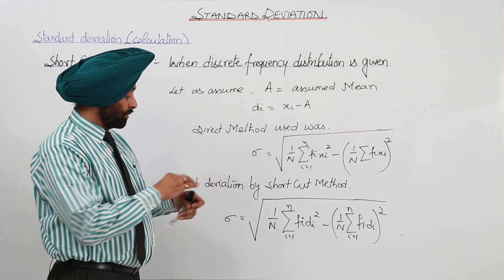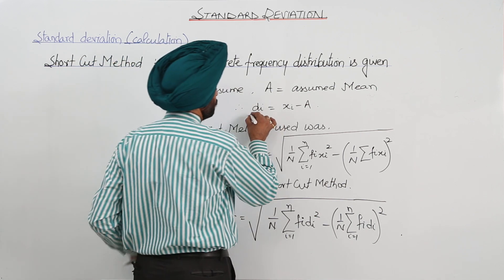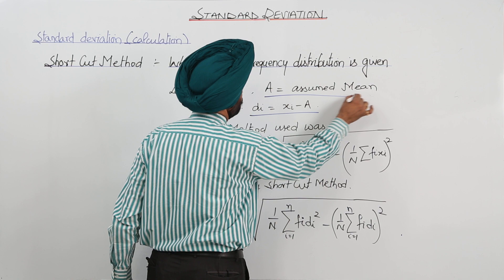And where DI what we have to take it? Where DI is this one and A is the assumed mean.